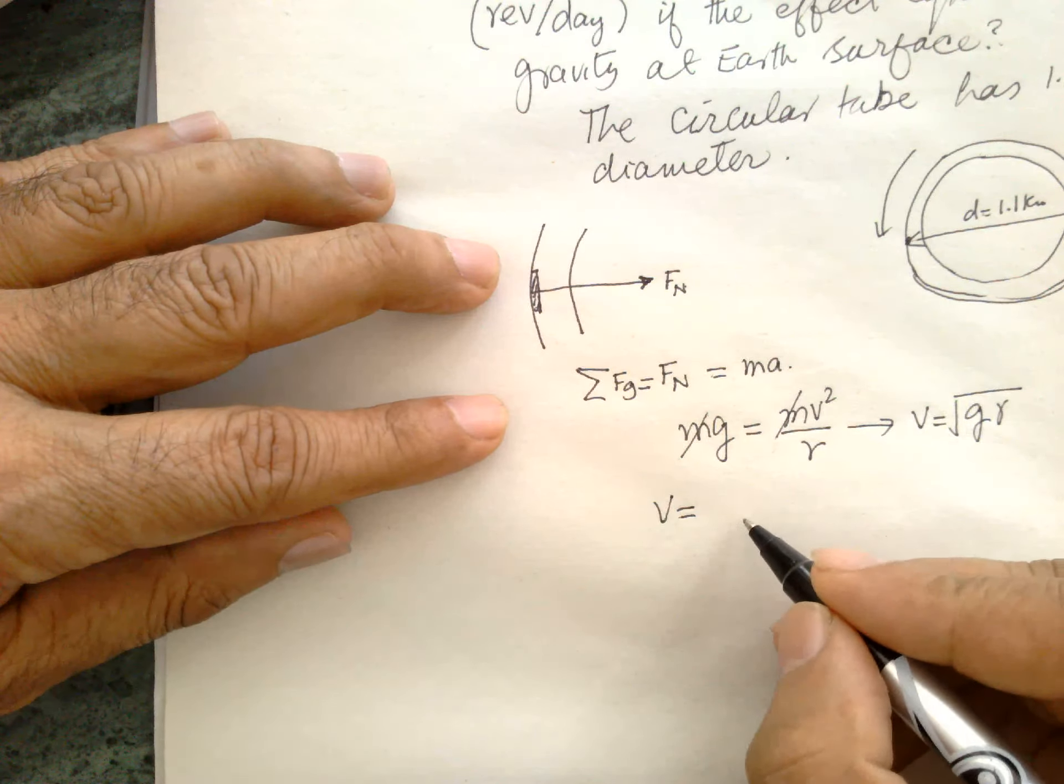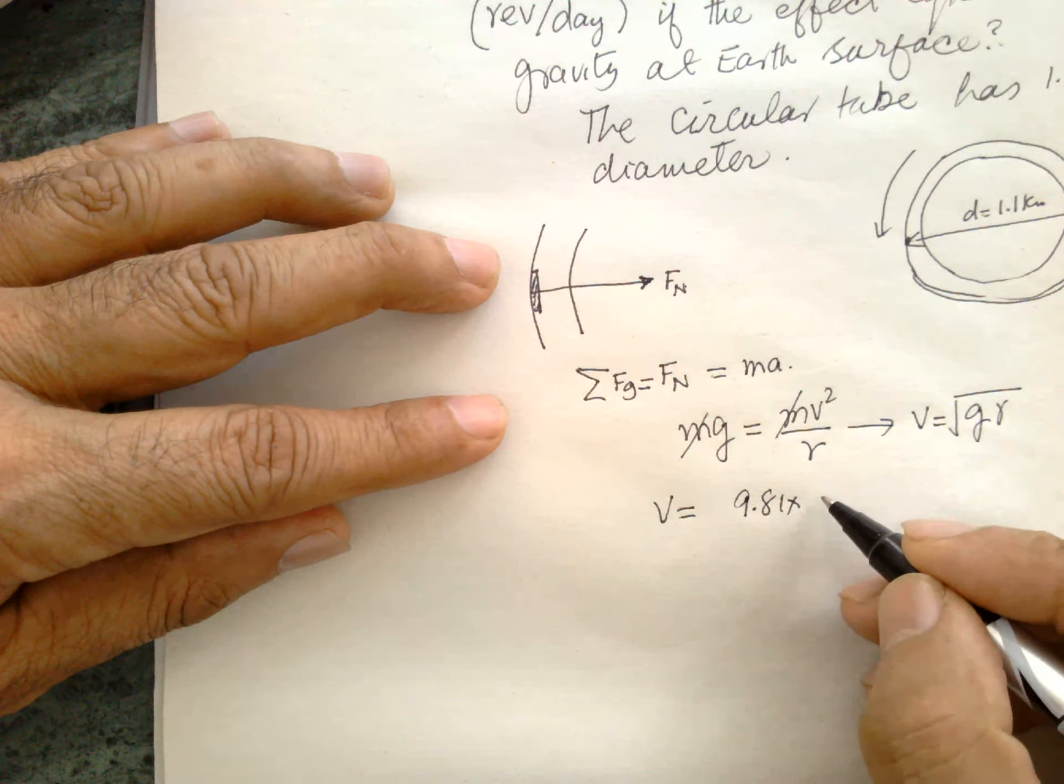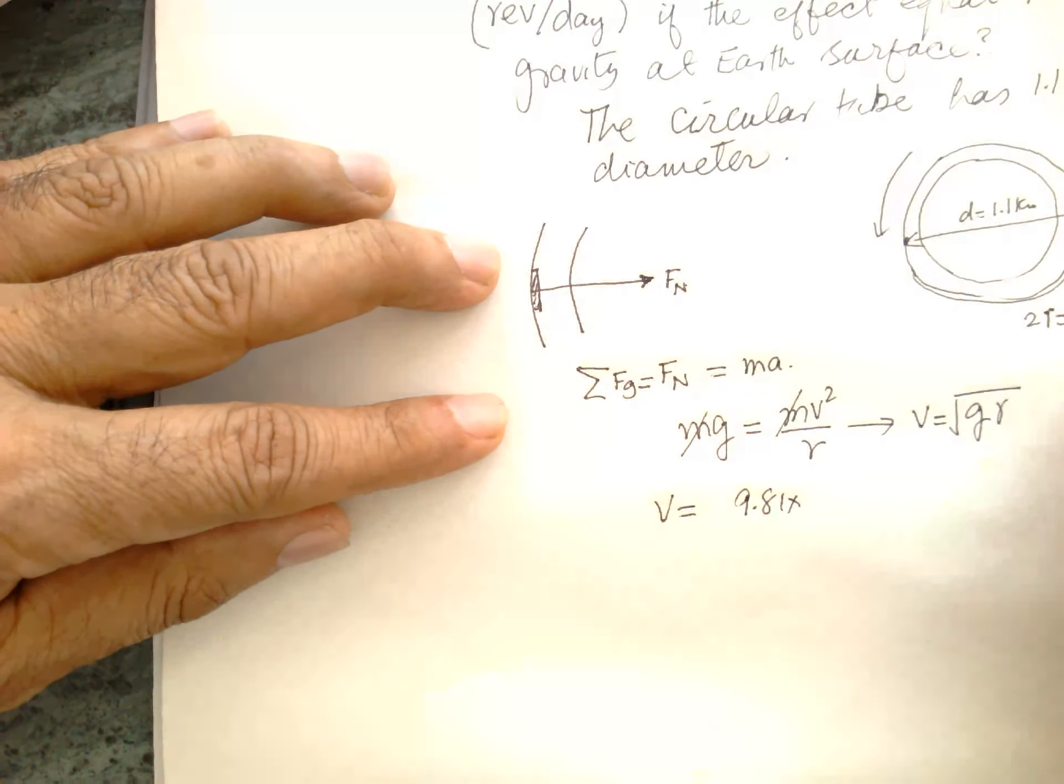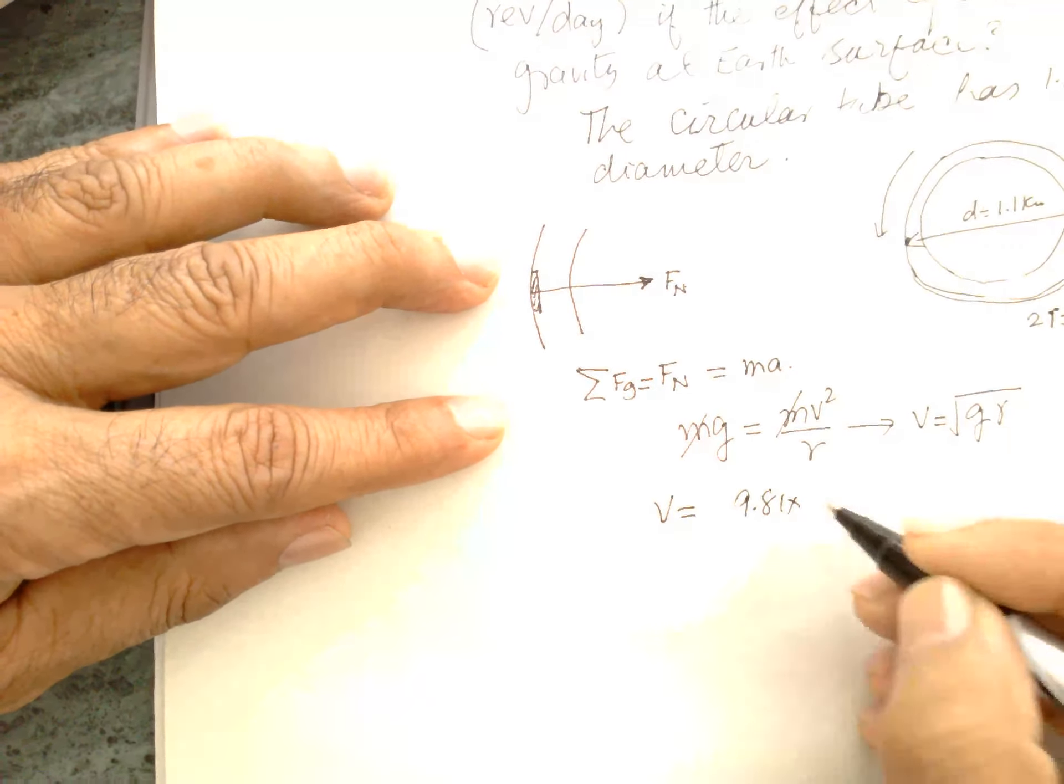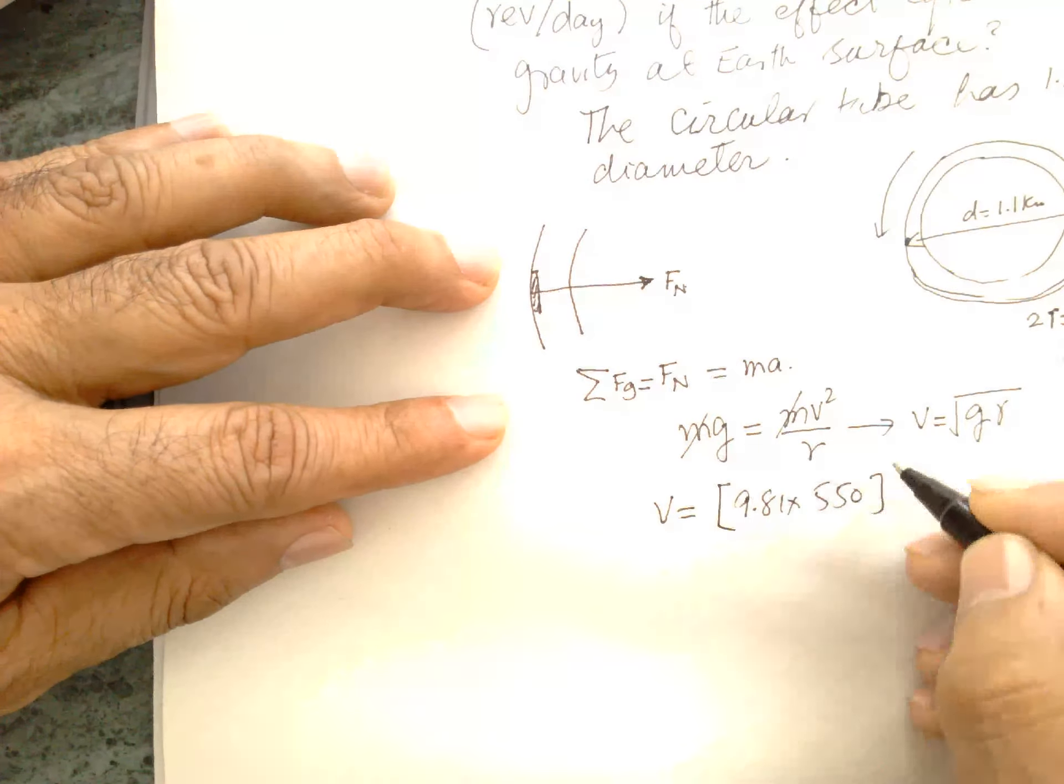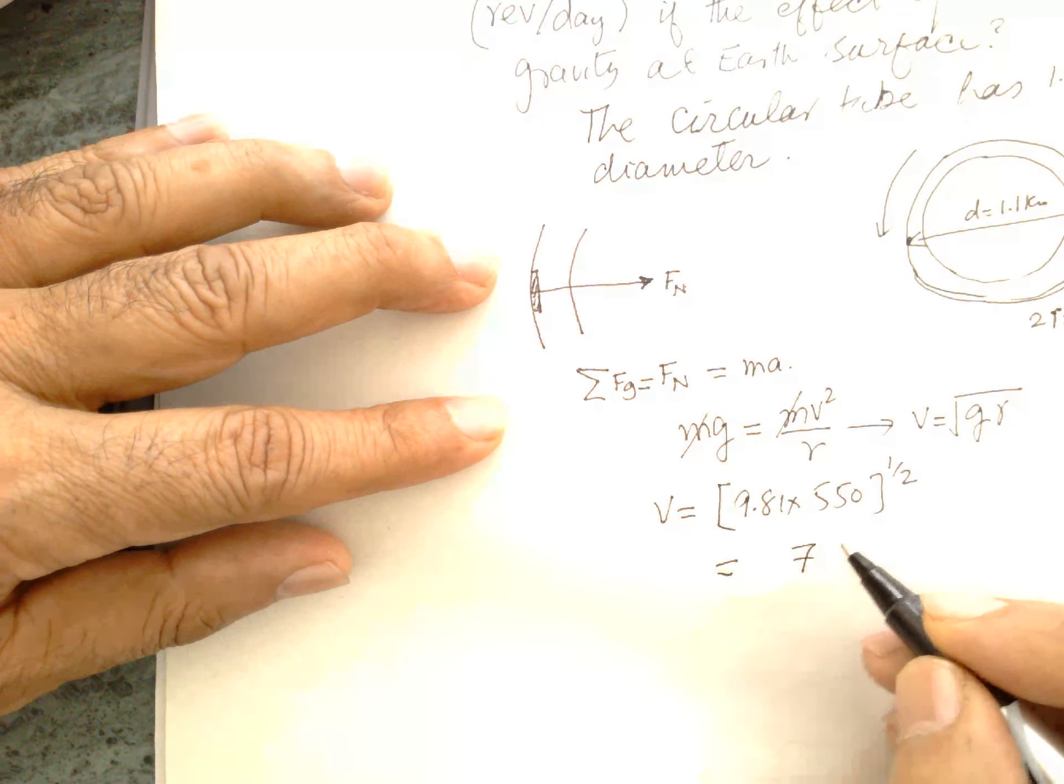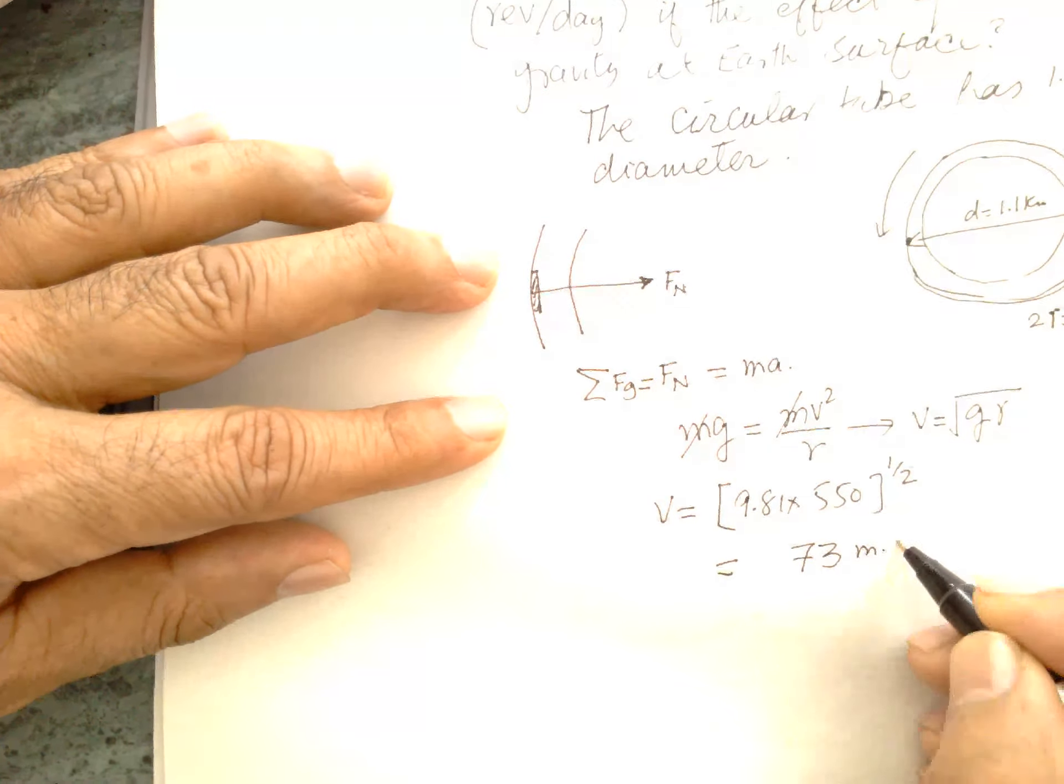9.81 multiplied by R. R, which is 2D, 2R is equal to 1.1 kilometer, so R is equal to 550 meters. So 550, it's a square root which is equal to 73 meters per second. This should be the speed.